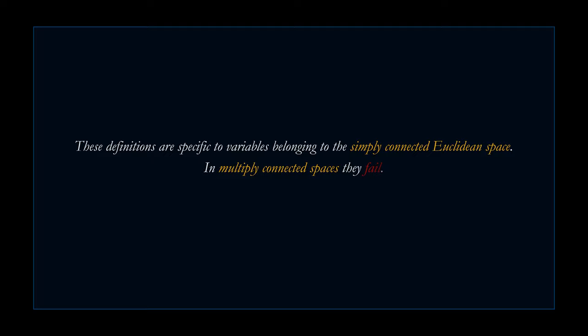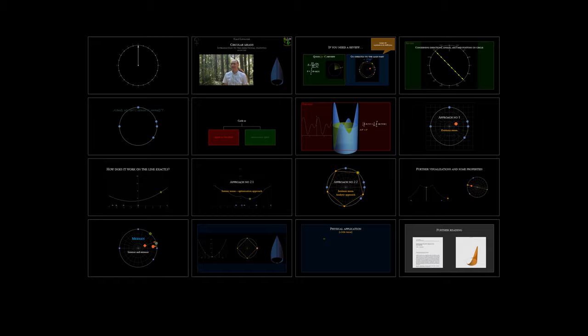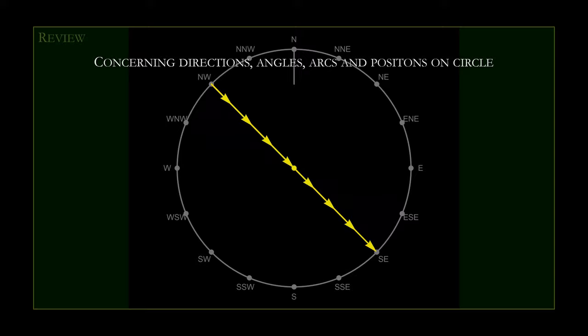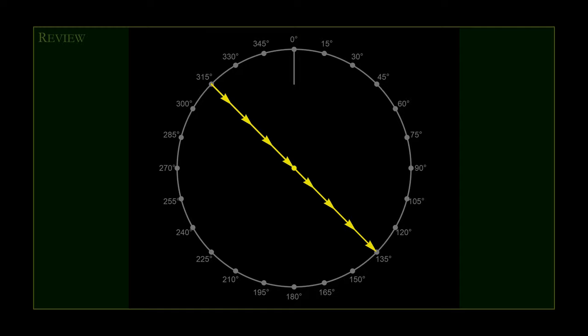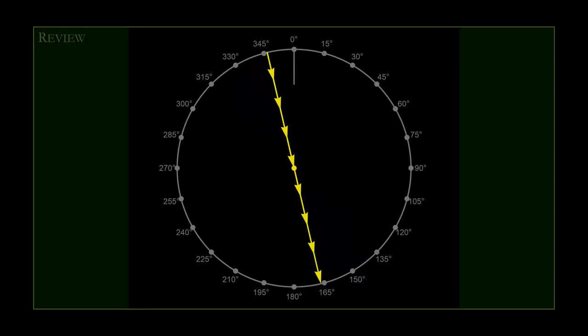These definitions are specific to variables belonging to the simply connected Euclidean space. In multiply connected spaces, they fail. Let's stick to the idea that we are interested in the direction of the wind. The wind direction is quantified as the measure of an angle from some reference direction. In a geographical context, we usually pick the north as the reference direction, and the angle measured from it is called an azimuth. More generally, we call this angle an orientation angle.